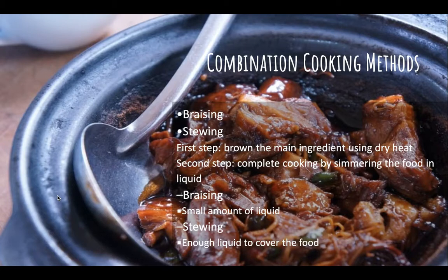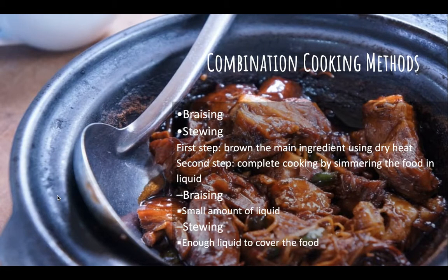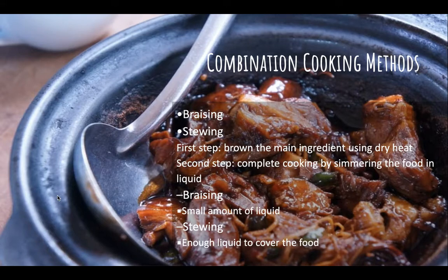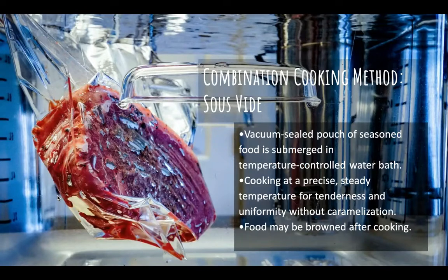Combination cooking methods such as braising or stewing involve two steps: first you brown the main ingredient — for example, browning short ribs — then you complete the cooking by simmering in a liquid. A braise uses a small amount of liquid, while a stew uses enough liquid to cover the food completely. For braised short ribs, you'd add just enough liquid to create steam, whereas in a stew you'd cover the meat completely and simmer until cooked.